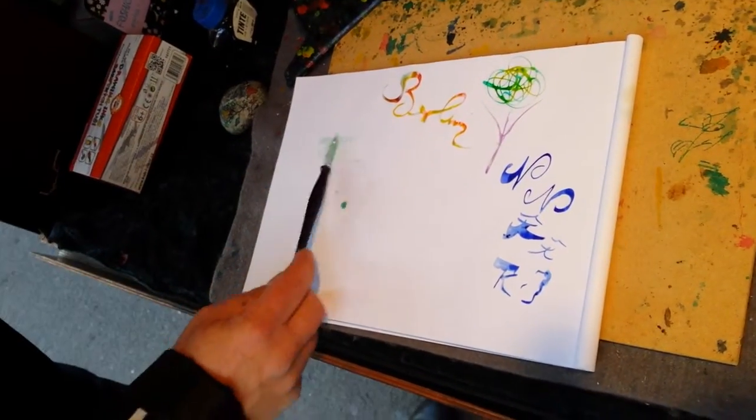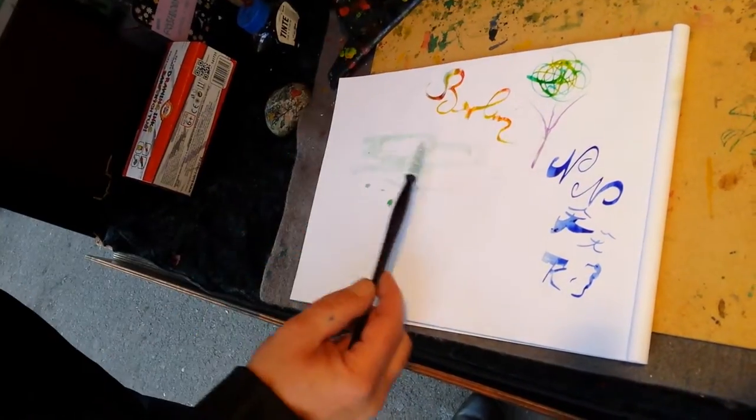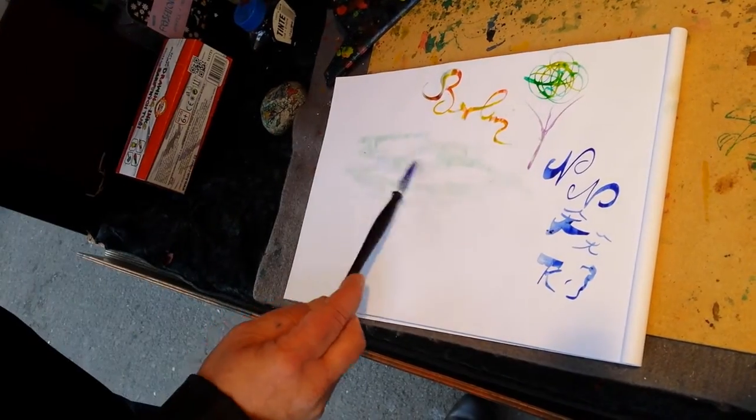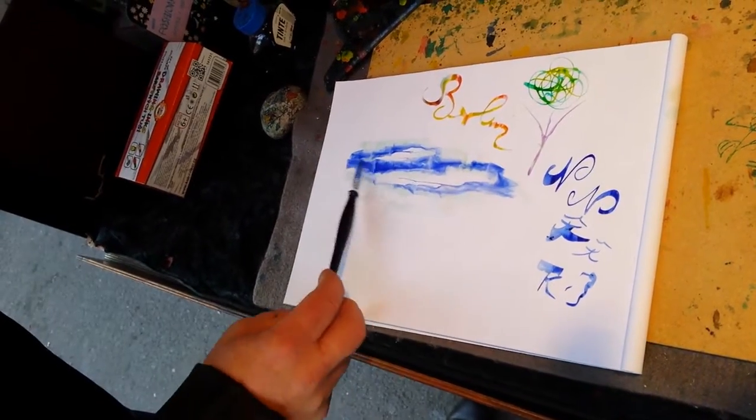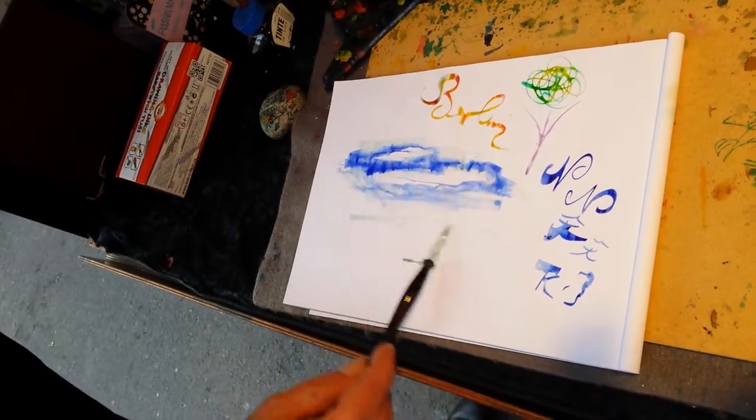Then I can paint a sunset in 45 seconds. A little blue for a sky. A little water, yellow for sun.